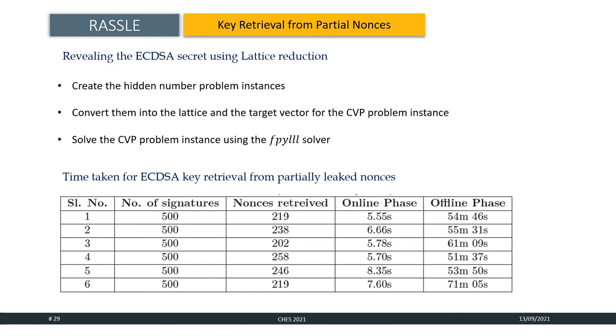This table shows the time taken for ECDSA key retrieval for partially leaked nonces, where we try with 500 signatures and we see the nonces retrieved in each of the cases, where the online phase took somewhere around 5 seconds to 7 seconds and the offline phase took around little more than one hour.